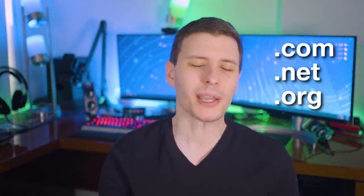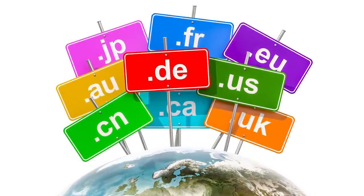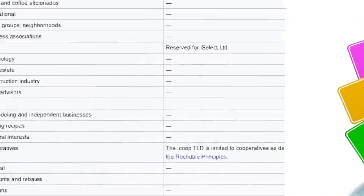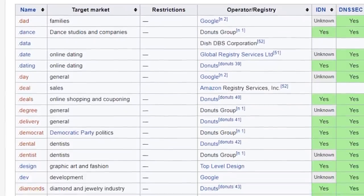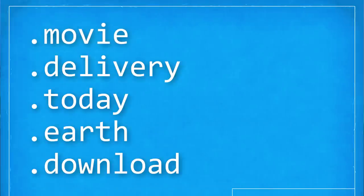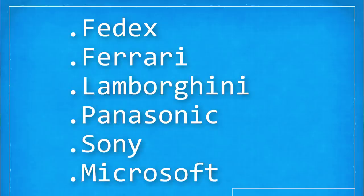Before, you probably know it was always .com, .net, .org, maybe the occasional .gov or one for your specific country. But these days there are way more — in fact, over 1,500 top-level domains. Some of these are really weird, like .movie, .delivery, .today, .earth, .download. Even major companies have bought up their own top-level domain with their company name — for example, FedEx, Ferrari, Lamborghini, Panasonic, Sony, Microsoft, and way more. These are all top-level domains now.